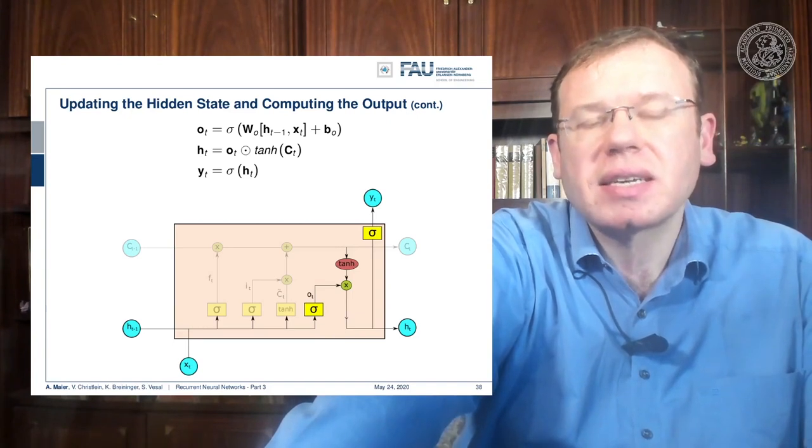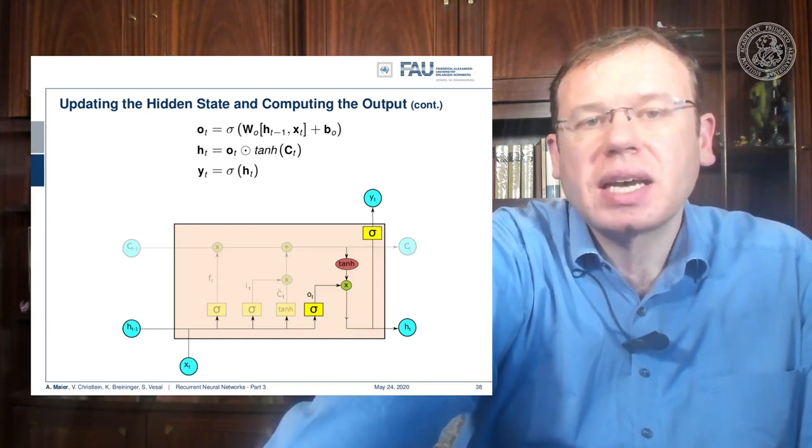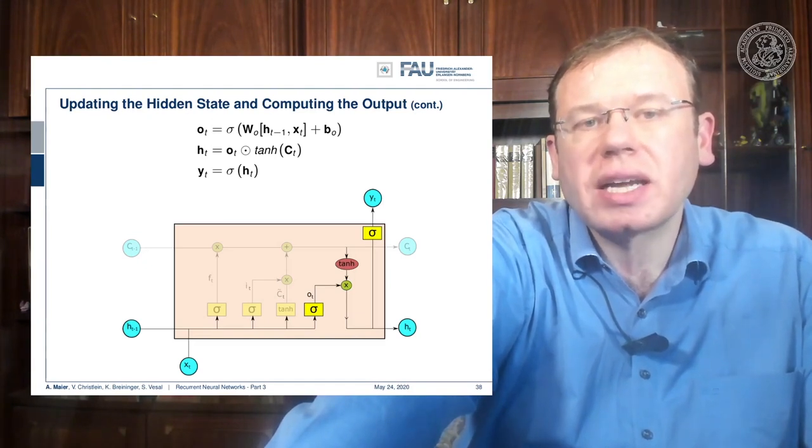This gives us the new hidden state, and with the new hidden state we can then pass it through another non-linearity in order to produce the output.